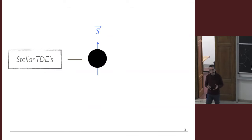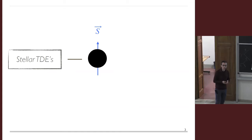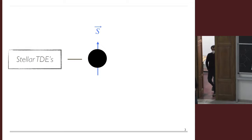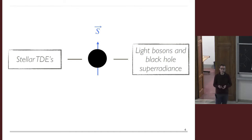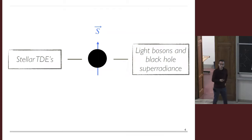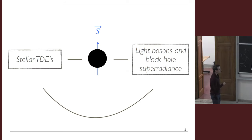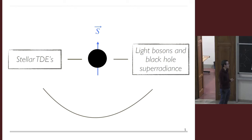Stellar TDEs happen when stars approach the black hole very closely, so they happen very near the horizon. Therefore the rate for this process depends very sensitively on the near-horizon geometry, which is affected by the spin of the black hole. The connection with BSM physics arises because new light bosons can extract spin from black holes by the super-radiant instability. Given that stellar TDE rates depend on spin, and spin can be severely affected by ultralight bosons, we can draw a connection to measurements of TDE rates.